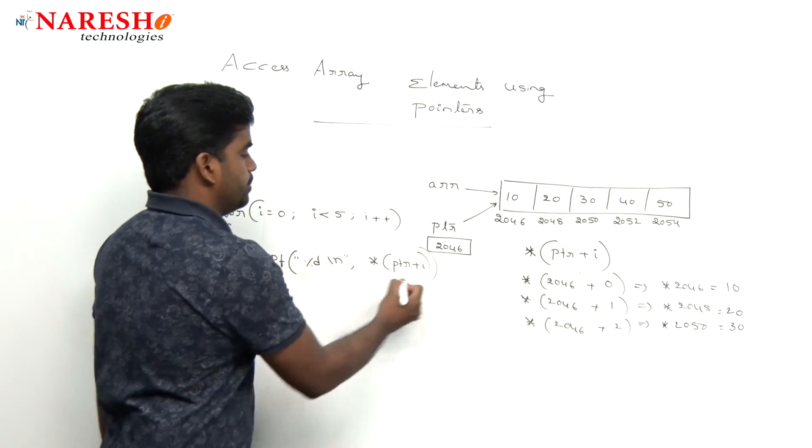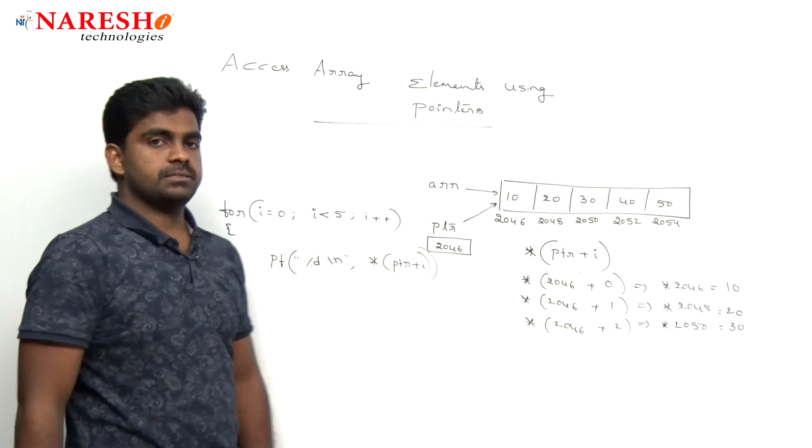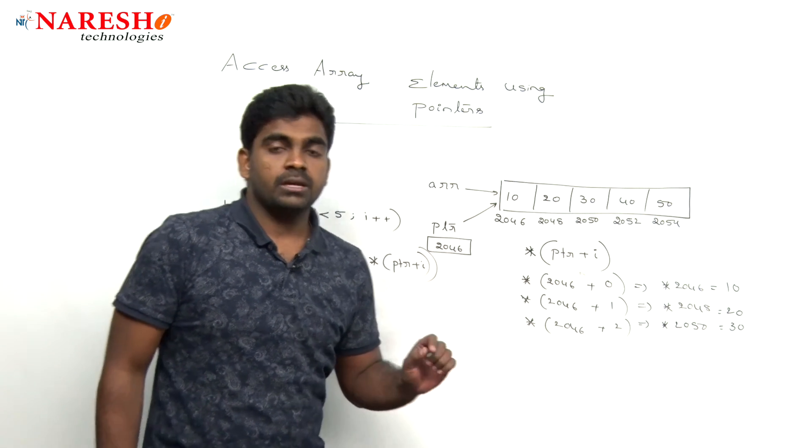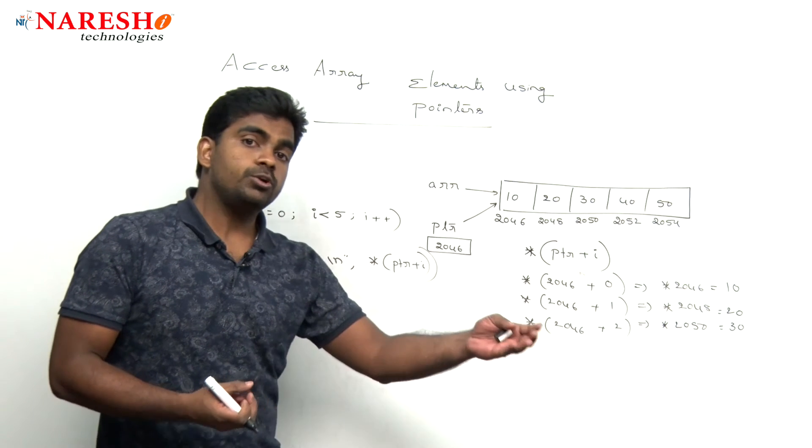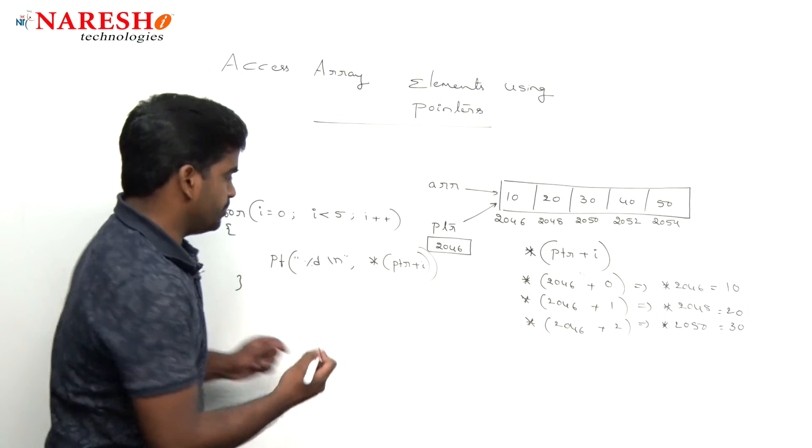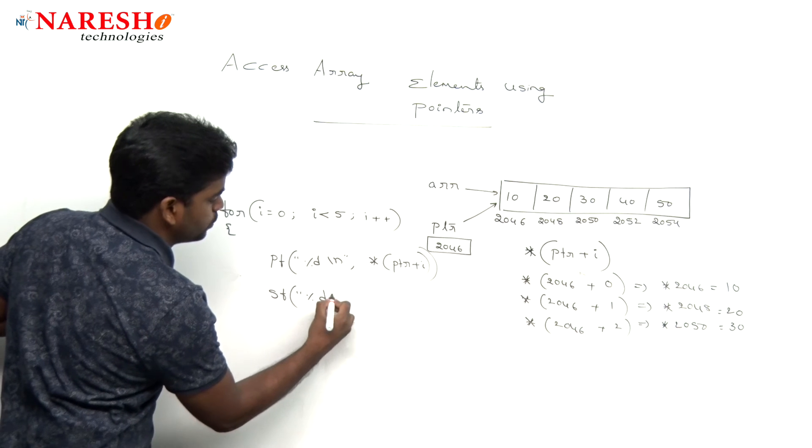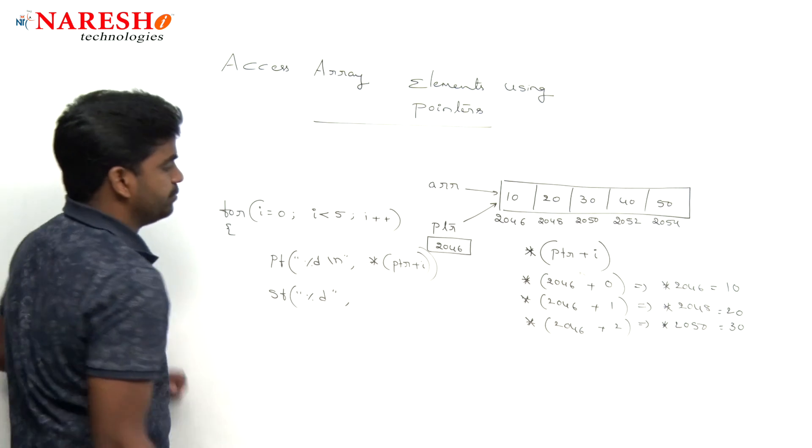This is how we are displaying the elements. For example, if I want to read the information, we use scanf. You can use another for loop to read the elements.